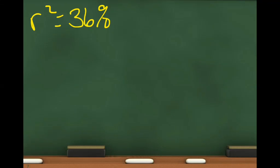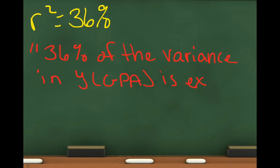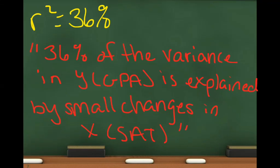Lastly, we have R squared, which is always expressed as a percent — here it's 36%. R squared talks about the variance explained in Y by the regression line. When you interpret R squared, you say: 36% of the variance in Y (GPA) is explained by small changes in X (SAT). It's always the percent of the variance in Y explained by changes in X.